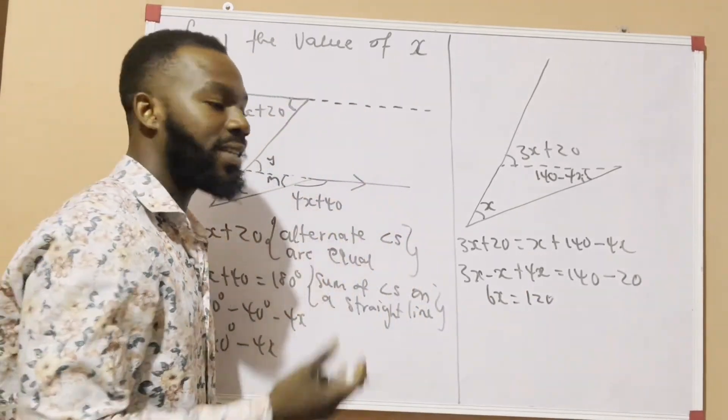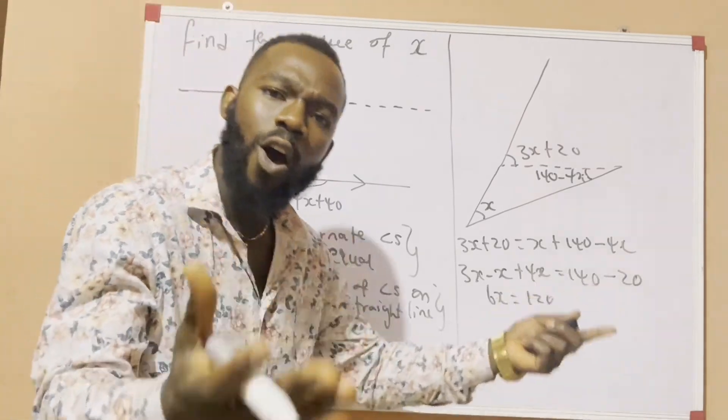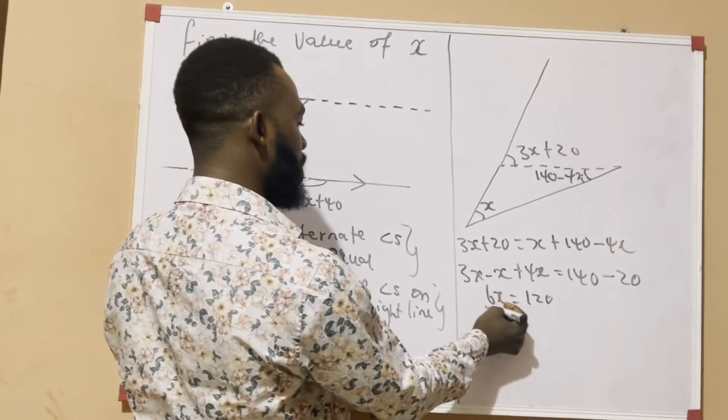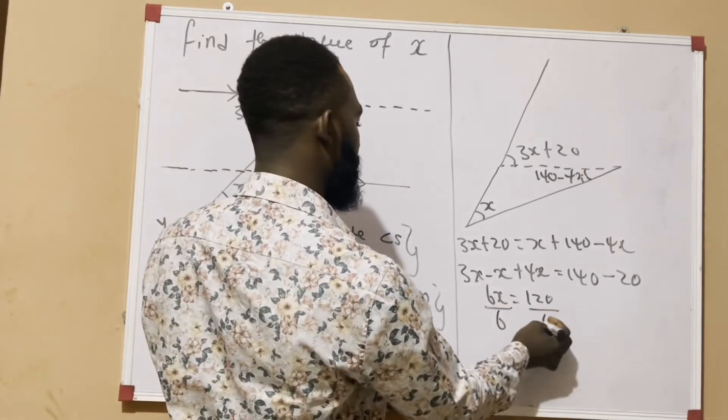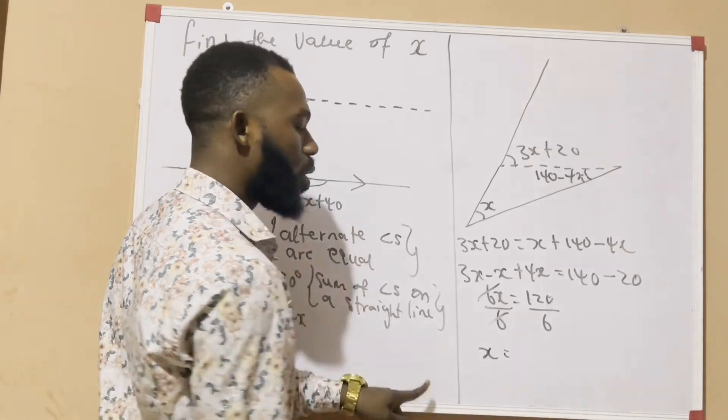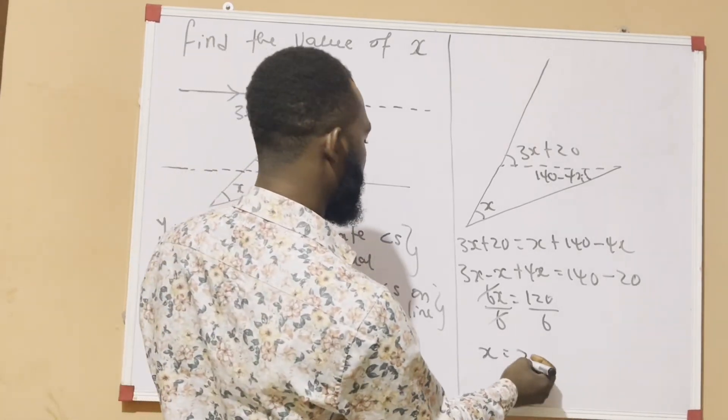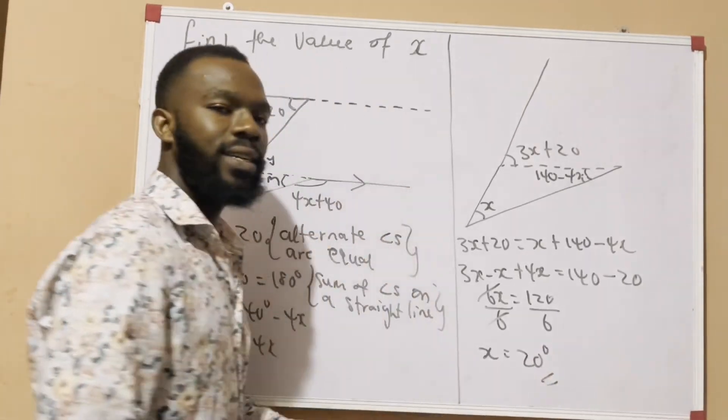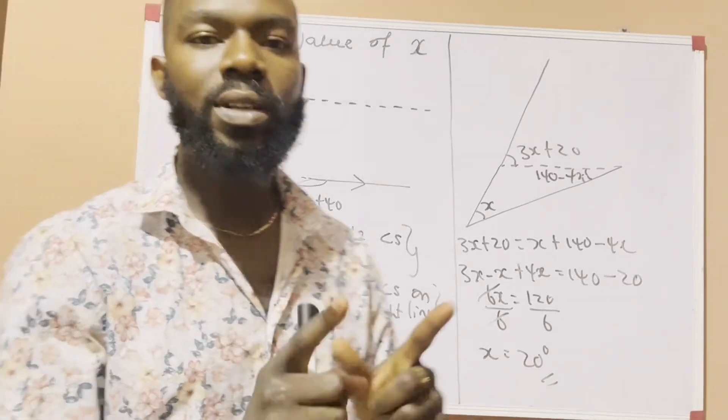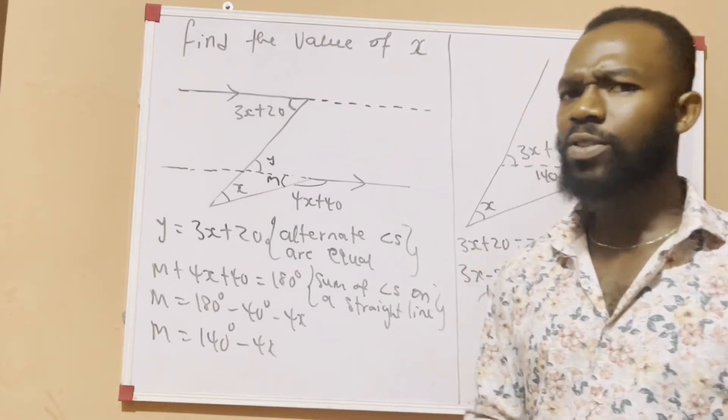So, class, for us to get the value of x, means x has to be the subject of the formula. And for x to be the subject of the formula, we have to divide both sides by 6. All right. So, when 6 divides 6, we have x is equal to 120 divided by 6 gives us 20 degrees. So, this is the answer to the question. You see how simple this could be?